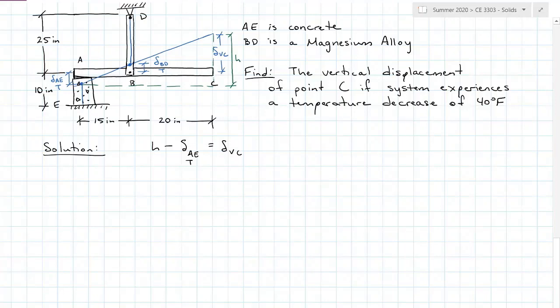Let me draw some more triangles. I have a red triangle right here with the 15 inch width, and my height here is my two temperature deflections. So I can have the temperature deflection for BD plus the temperature deflection for AE all over 15 inches. I can do similar triangles and set that equal to that height H that I'm looking for over the entire 35 inch length of my green triangle.